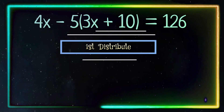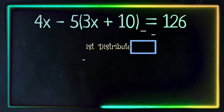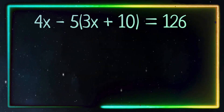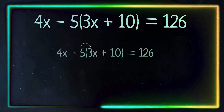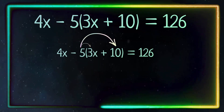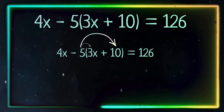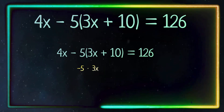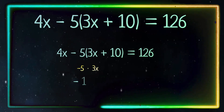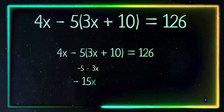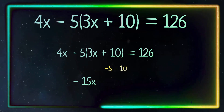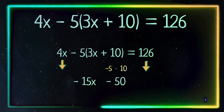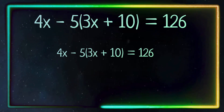Our first step is going to be to distribute the negative 5 to the 3x and negative 5 to 10. Negative 5 times 3x equals negative 15x, and negative 5 times 10 equals negative 50. So now our equation reads: